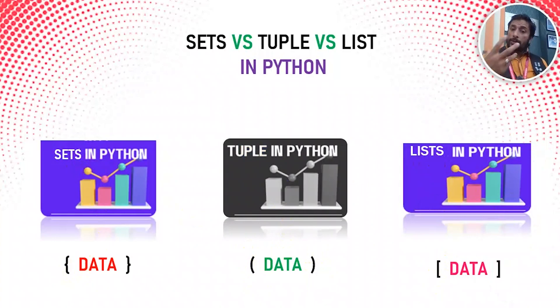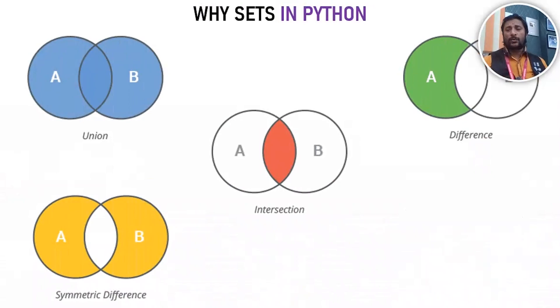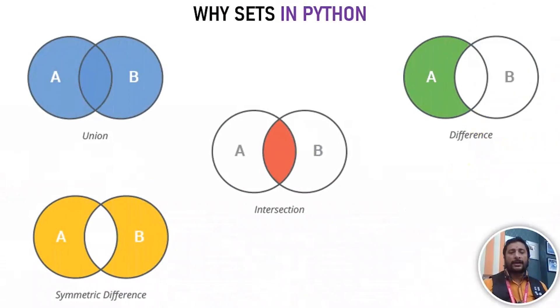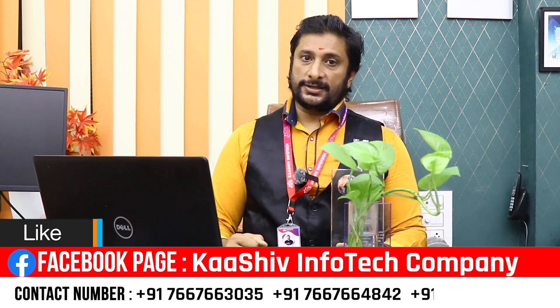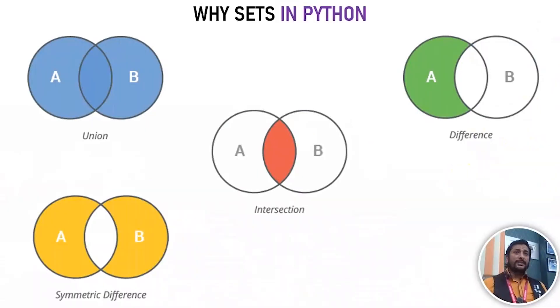So we talked about the list and we talked about sets. The concept of sets is very simple — it is related to arithmetic operations. Let's talk about set operations and the Venn diagram.